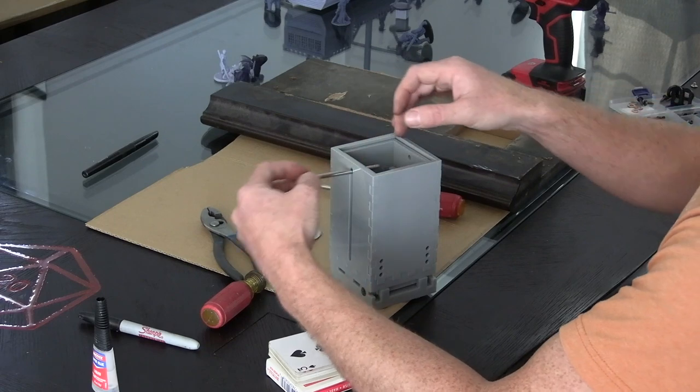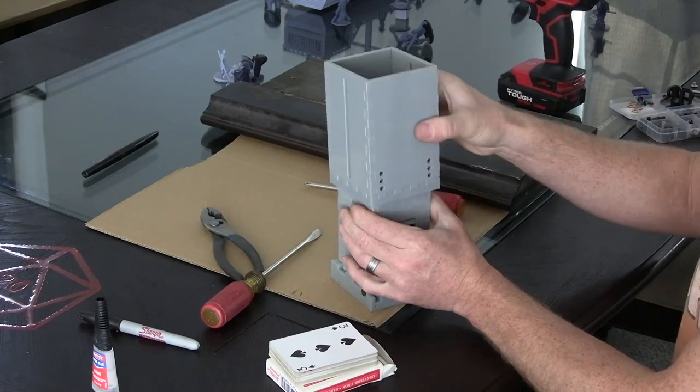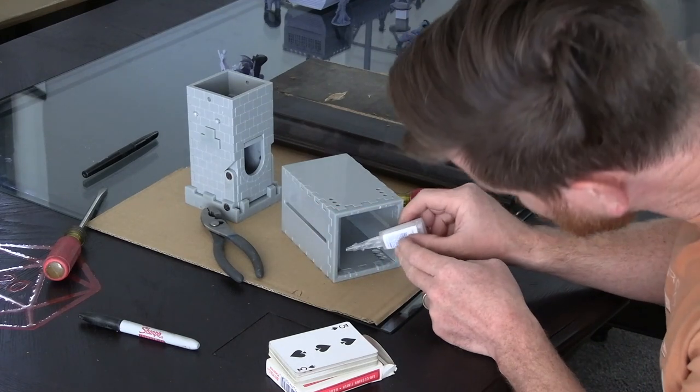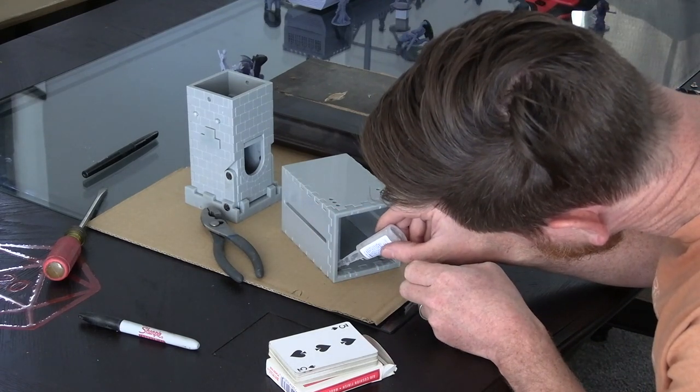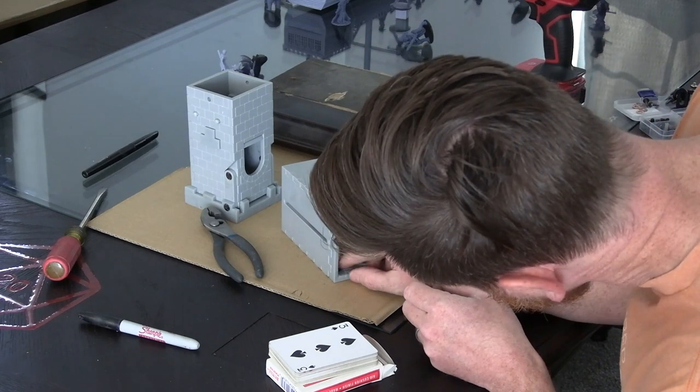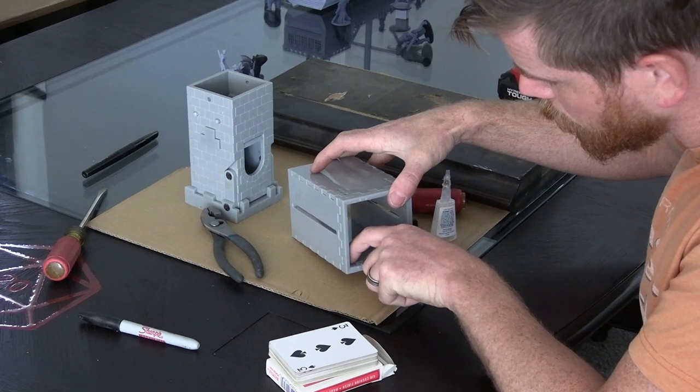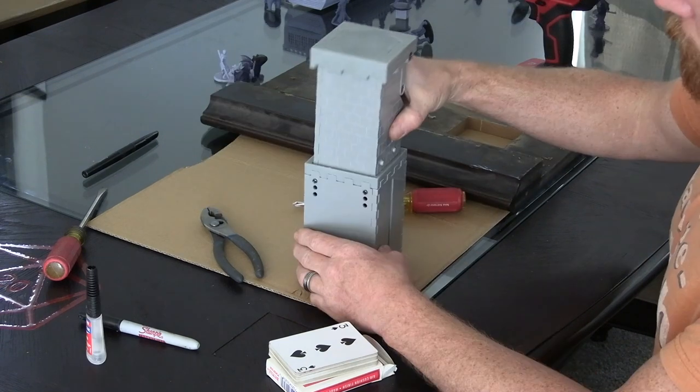After those pilot holes are drilled I can now disassemble the tower in order to install the last four Chicago screws. A small dab of super glue will go into the appropriate countersunk hole and then I can drop the Chicago screw in and press it home. Repeat that process for all four screws and then reassemble the dice tower.